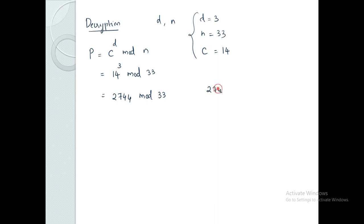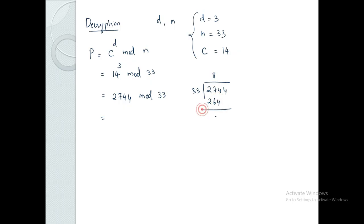We calculate 2744 mod 33. Dividing: 33 into 8 is 264, balance is 10, leaving 104; 33 into 3 is 99, so the remainder is 5. Therefore P equals 5, which is the original message M. This confirms that encryption and decryption are correct.